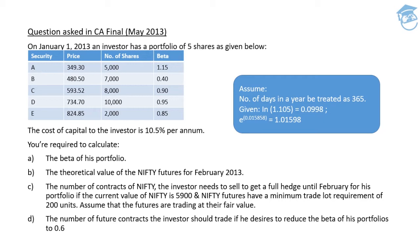Beta of his portfolio - we have been provided with this table which is security A to E. They have provided us the prices, the number of shares, and the individual beta. All we need to do is calculate the overall portfolio beta. What needs to be done is multiply your price of security A with the number of shares that you are having. That will basically provide you the valuation of your portfolio for a particular stock. So multiply your prices of each security with its respective number of shares to get the amount invested in one particular security.